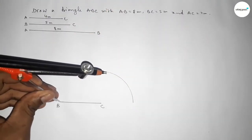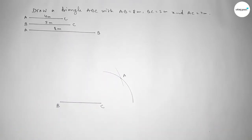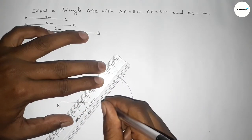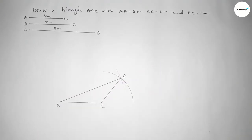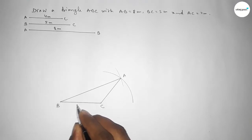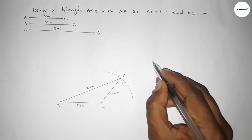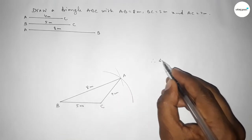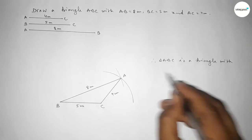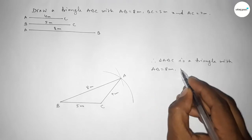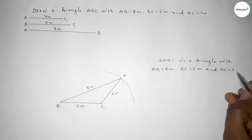Now taking the length AB equal to 8 centimeter using a compass, putting the compass on point B, and cutting here so both curves intersect at point A. Now joining A and C, then joining A and B to get triangle ABC — this side 5 centimeter, this side 4 centimeter, and this side 8 centimeter. Therefore triangle ABC is a triangle with AB equal to 8 centimeter, BC equal to 5 centimeter, and AC equal to 4 centimeter.